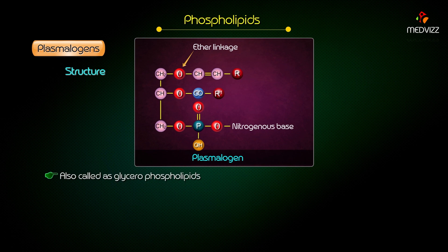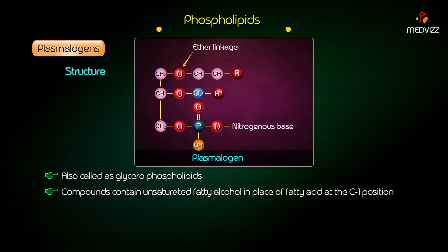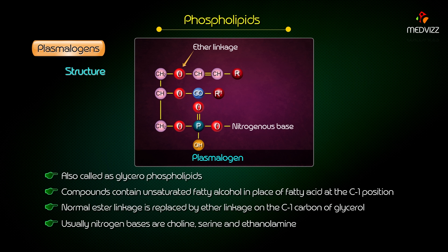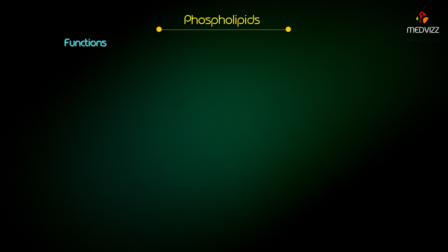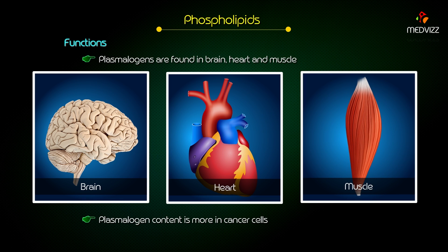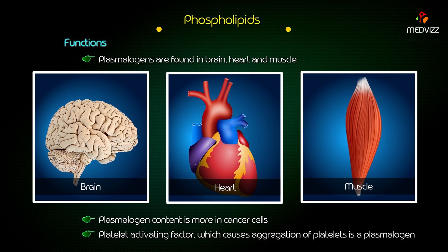Plasmalogens — structure. They are also called glycerophospholipids. These compounds contain unsaturated fatty alcohol in the place of fatty acids at the C1 position. Hence, the normal ester linkage is replaced by an ether linkage on the C1 carbon of glycerol. Usually, the nitrogen bases are choline, serine, and ethanolamine. Functions: they are found in the brain, heart, and muscle. Plasmalogen content is more in cancer cells. Platelet activating factor, which causes platelet aggregation, is a plasmalogen.